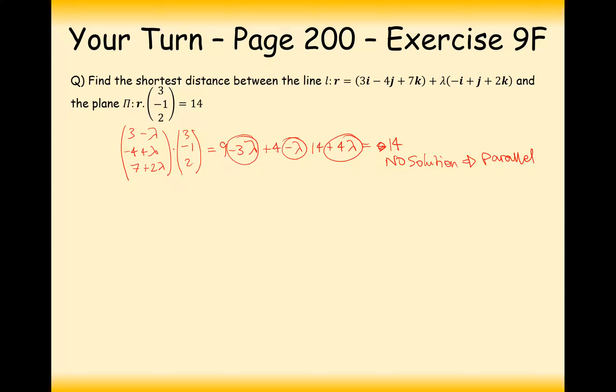So moving on to actually finding the shortest distance now. It's just going to be the shortest distance between this point and this plane. So we substitute it into the formula: the modulus of 3 times 3, add minus 4 times minus 1, add 2 times 7, minus 14, all divided by the square root of 3 squared, 1 squared and 2 squared.